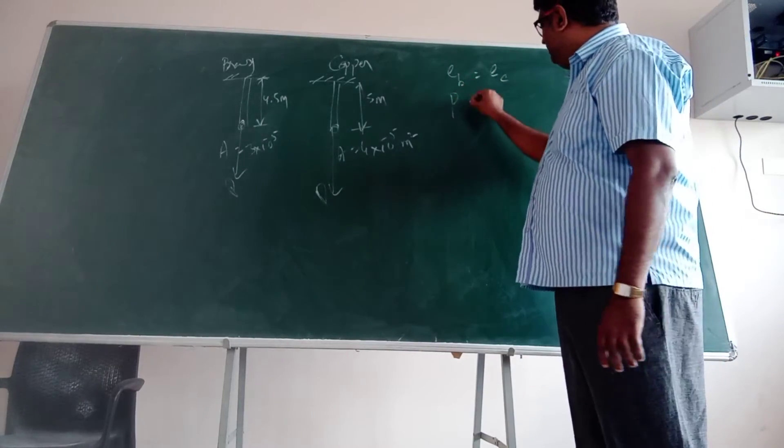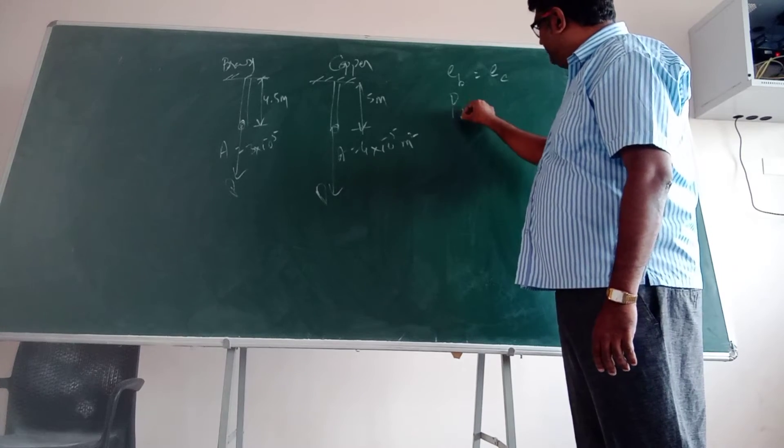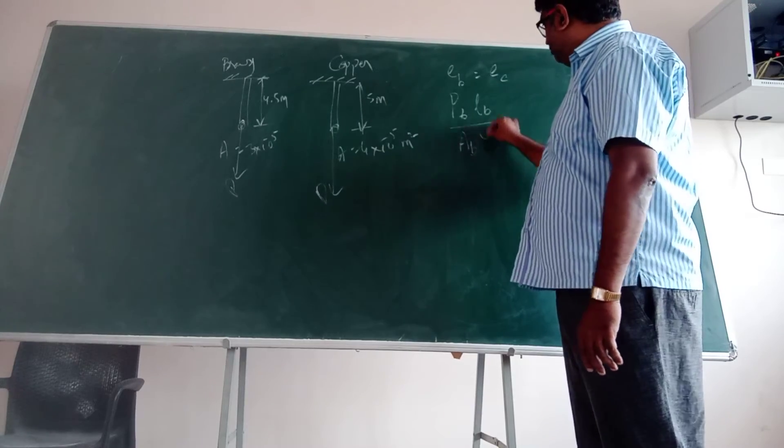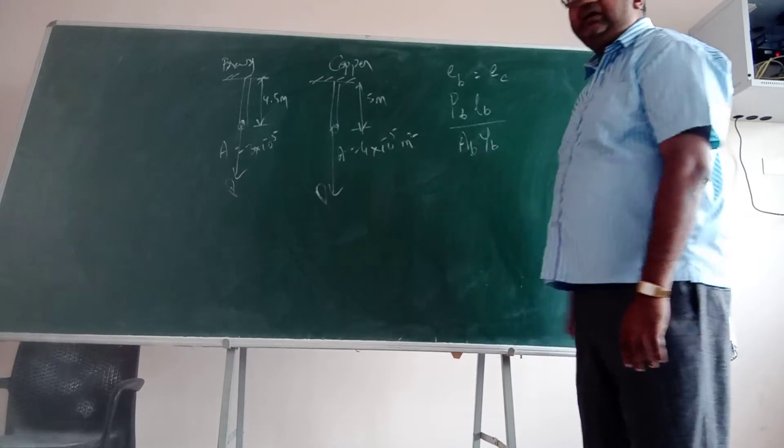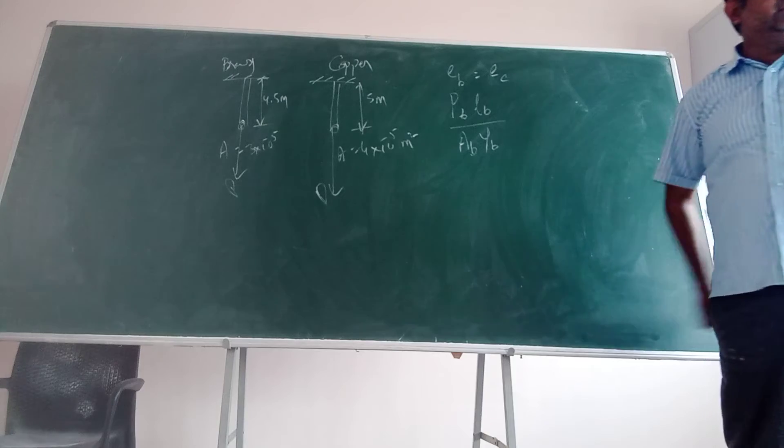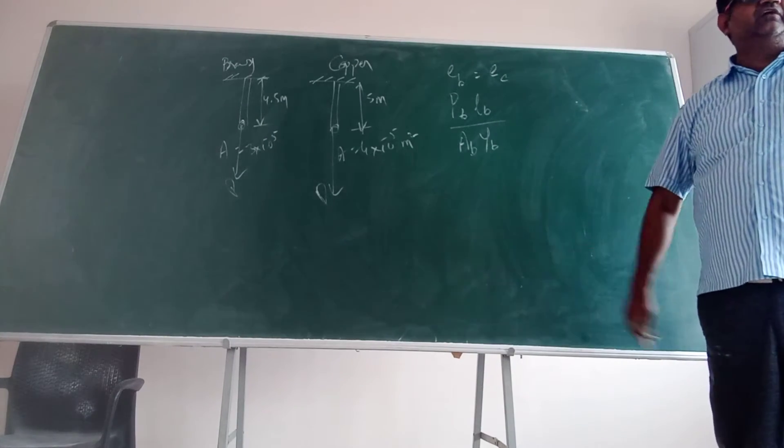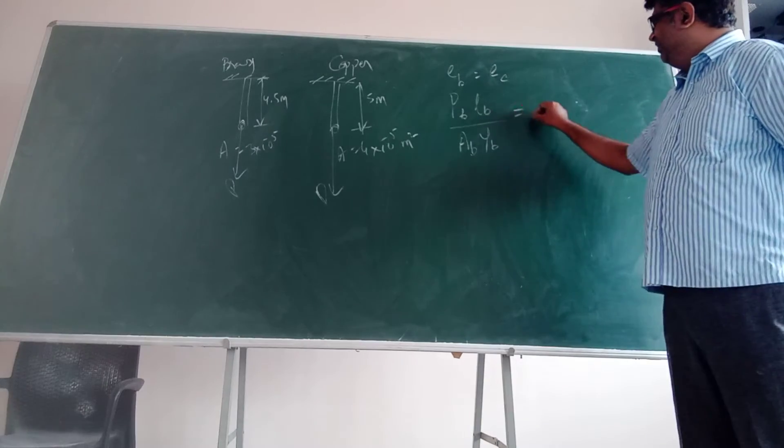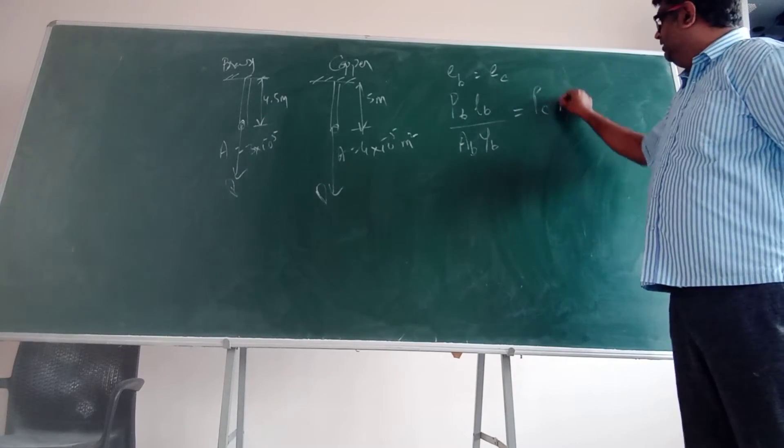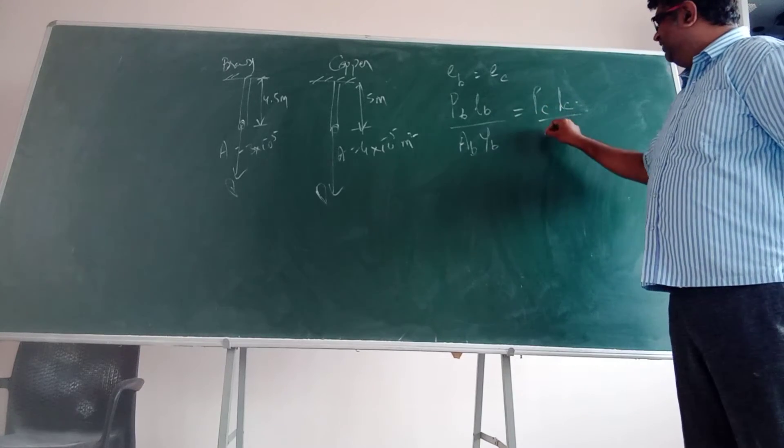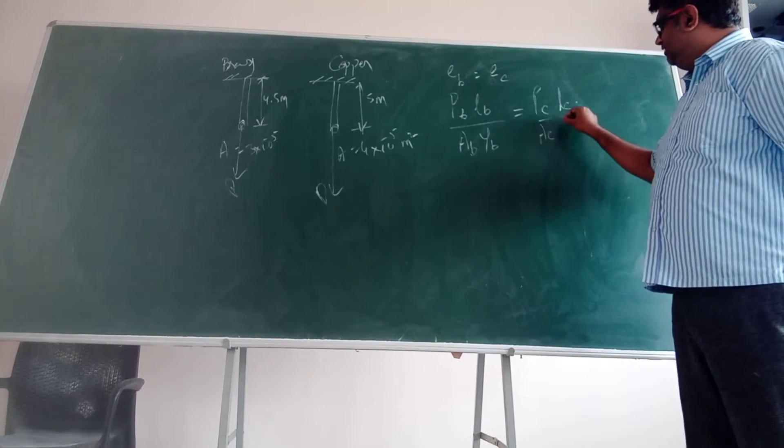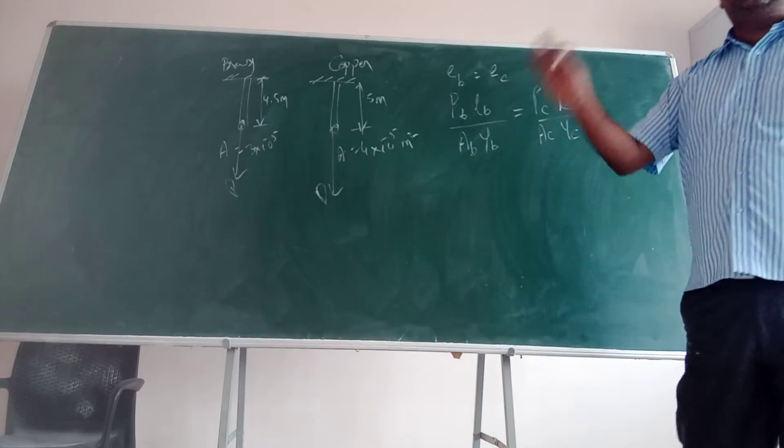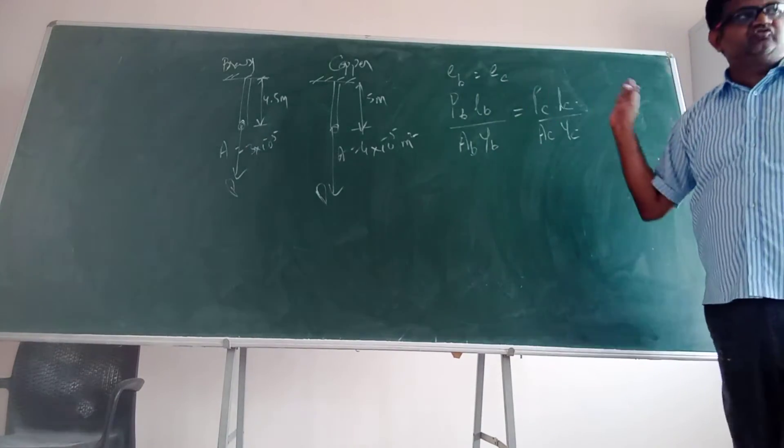Alright. So E of B is equal to E of C. But what is E of B? E of B is P of B times L of B divided by A of B times Y of B, am I right? I am writing the suffix because there are two things so you will get confused. Make a habit of writing like this. Is equal to P of C into L of C divided by A of C into Y of C, am I right? This is the condition which is given in the question. Everyone understood this? Anyone in doubt?